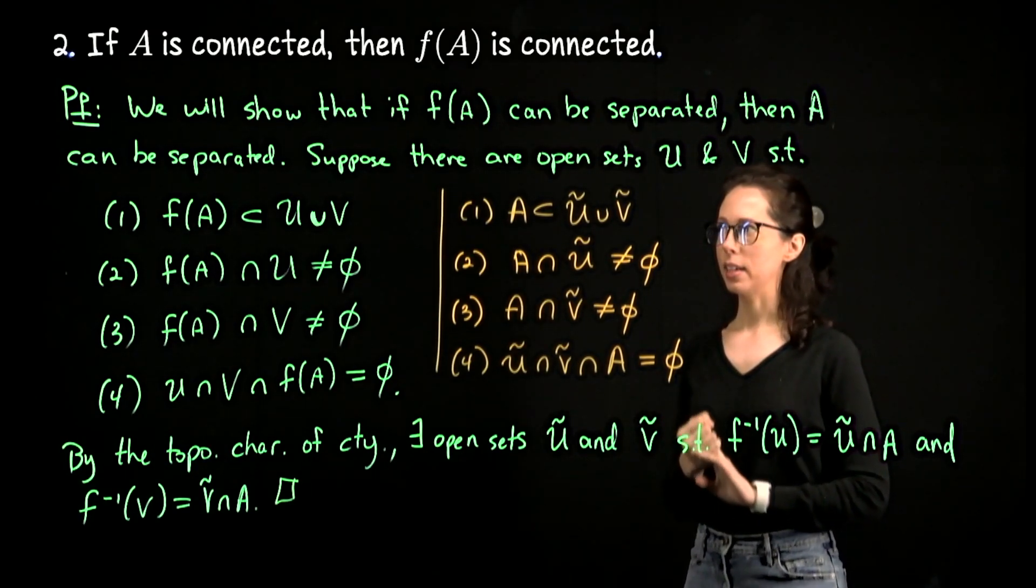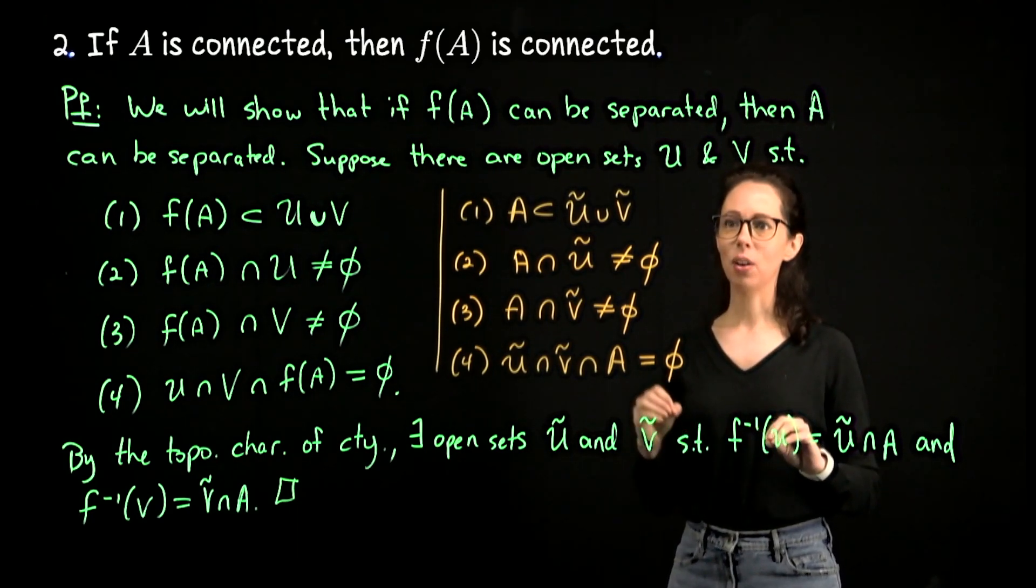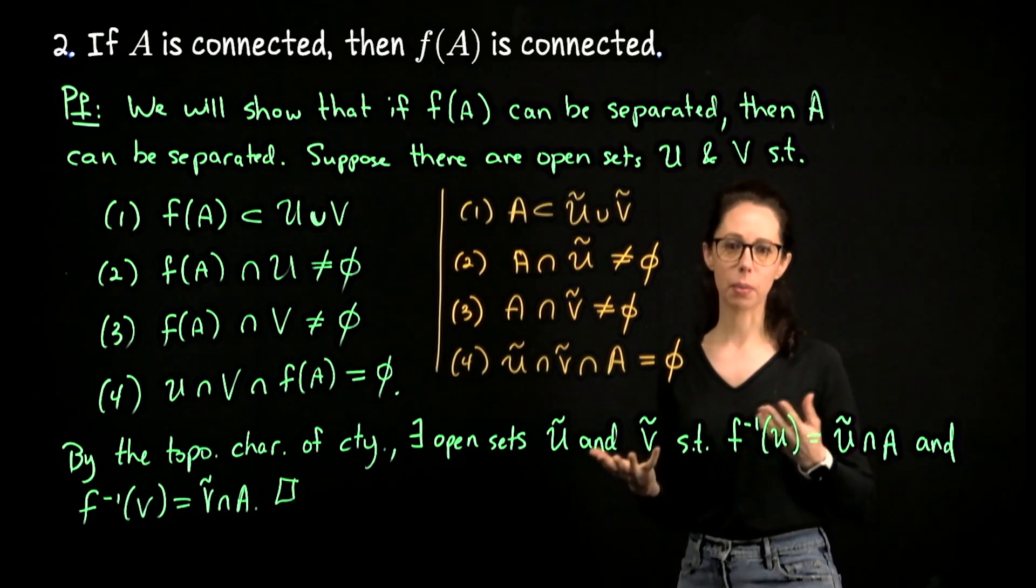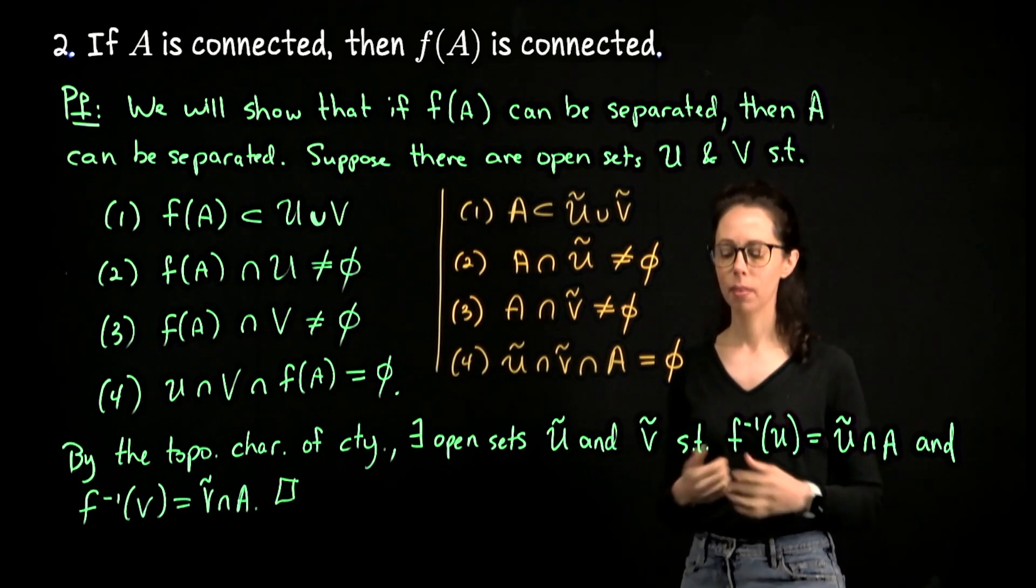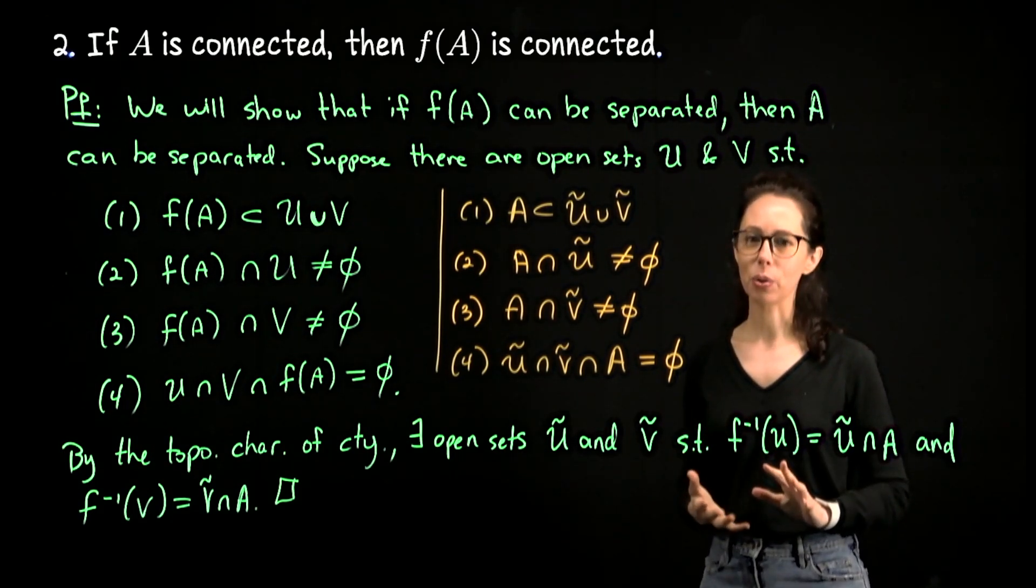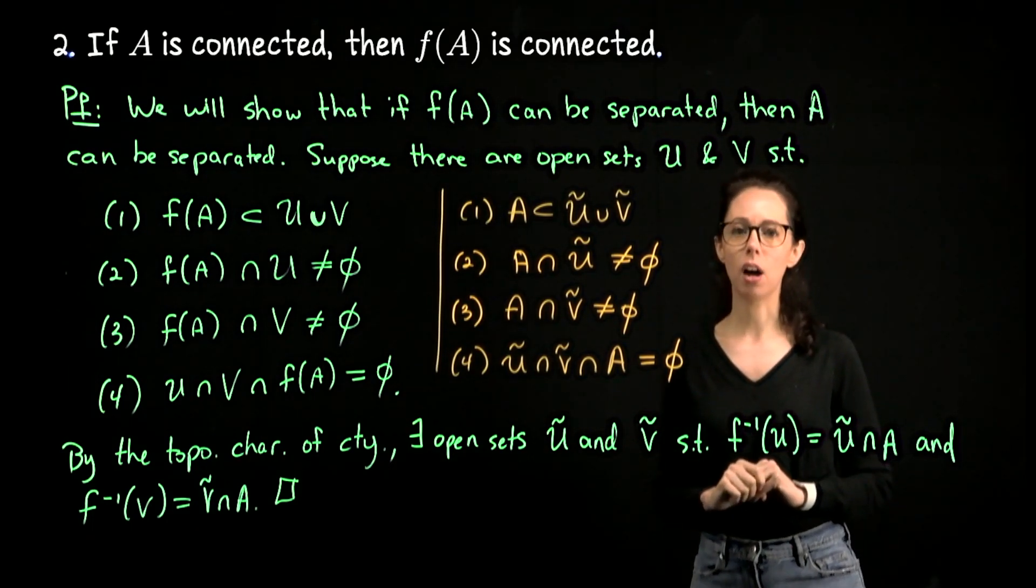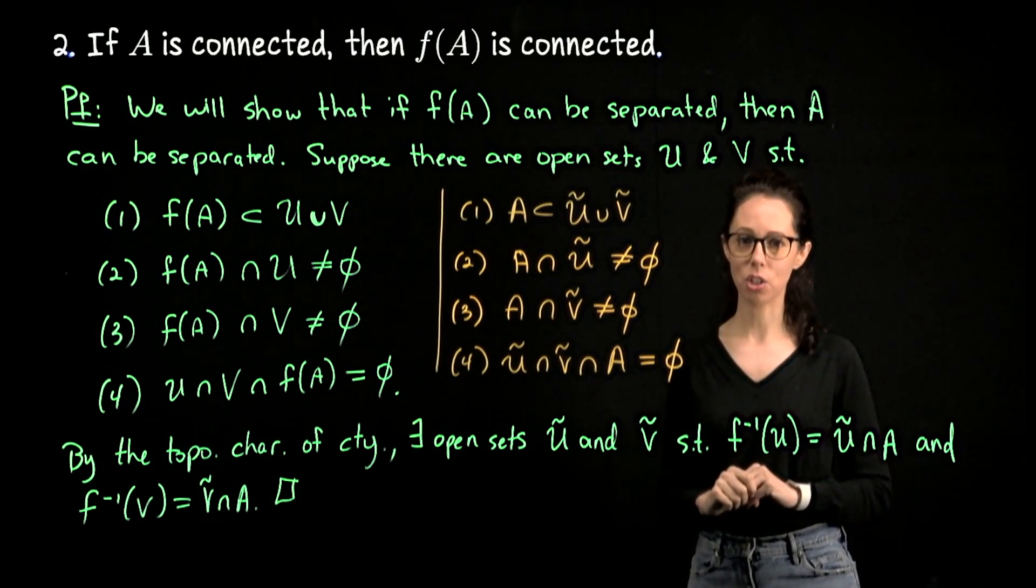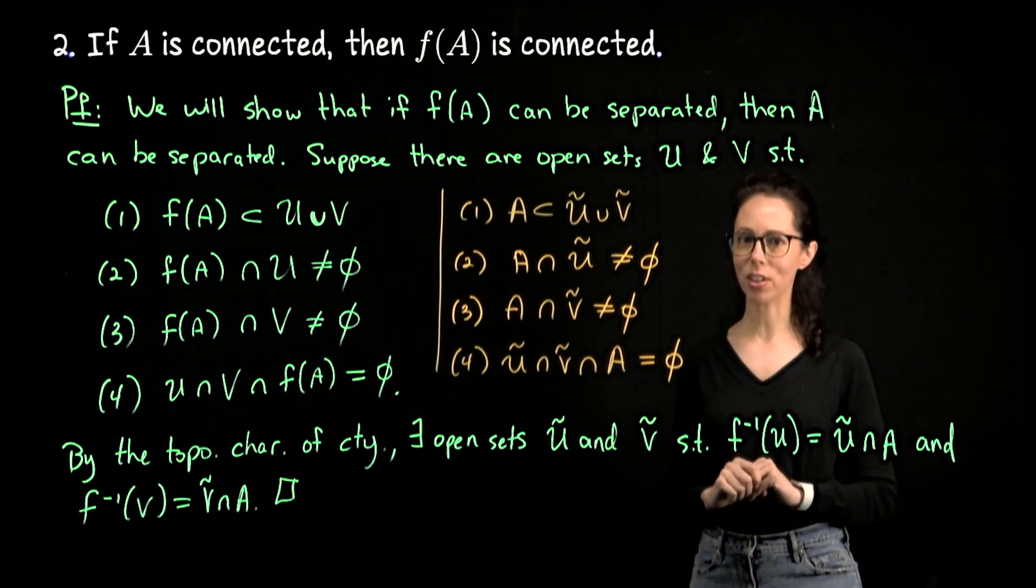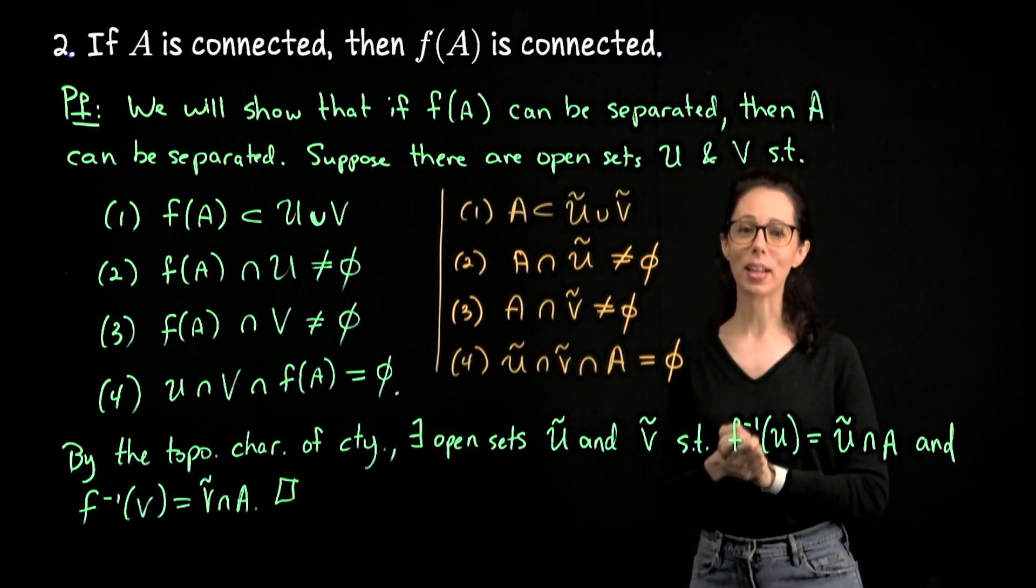So this wraps up the proof that if A is connected and f is continuous, f of A is connected. We see now that being compact is preserved by a continuous function, as is being path connected or connected. If you haven't had a chance to think through this yet, I'm going to go ahead and tell you that being open and closed, these are not preserved. So a continuous function on an open domain does not necessarily have an open image. And similarly, a continuous function on a closed domain does not necessarily have a closed image. I won't go into that more in this video, but you're welcome to think through why that's not the case.